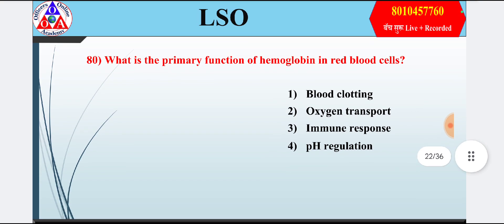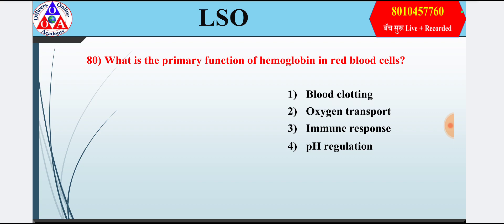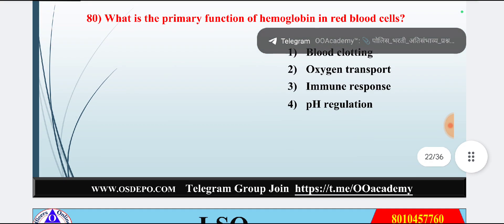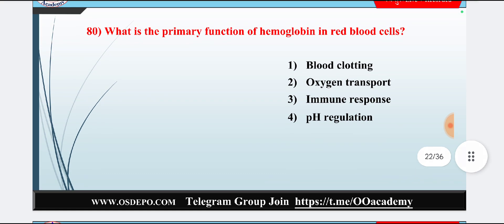Question 20: What is the primary function of hemoglobin in red blood cells? Option 1: blood clotting; option 2: oxygen transport; option 3: immune response; option 4: pH regulation. Answer is option 2 — oxygen transport.